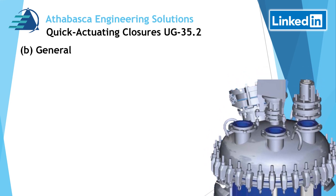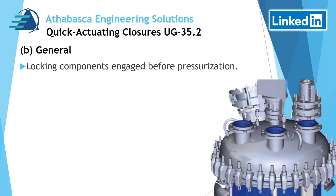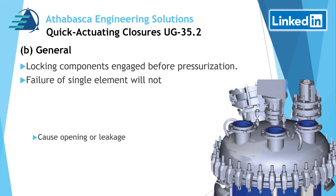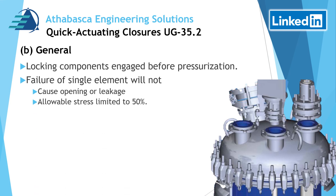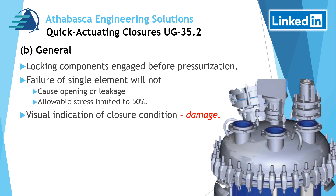In Part B, general requirements: locking components must be engaged before pressurization. Failure of a single element will not cause opening or leakage. The allowable stress cannot exceed 50% in this design — that 50% limit is really to reduce the chance of fatigue. There must be visual indication of the closure condition so you can see any damage, and visual indication of whether it is fully engaged is also a requirement.